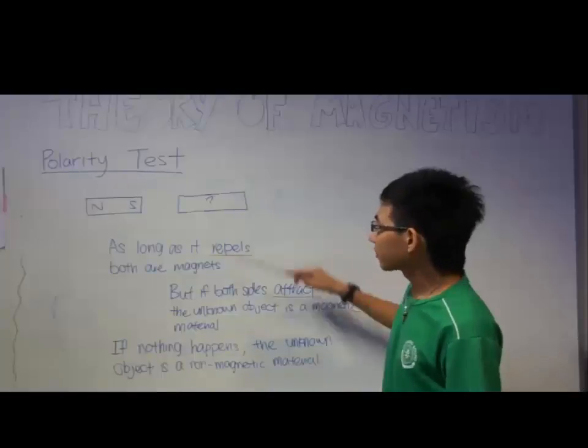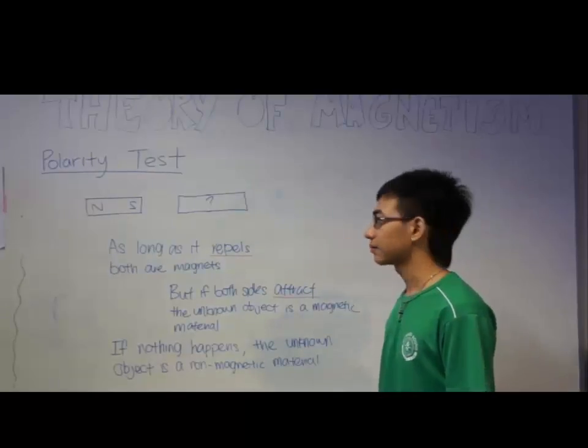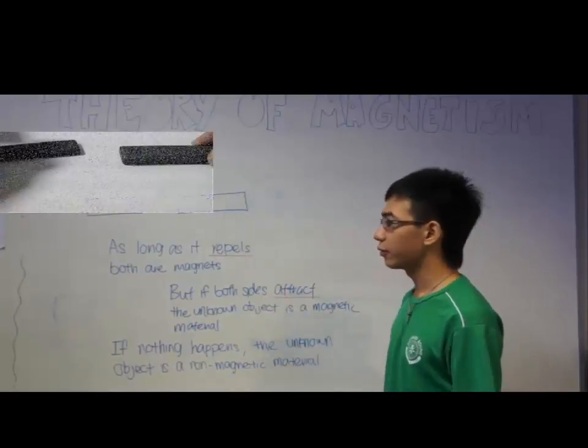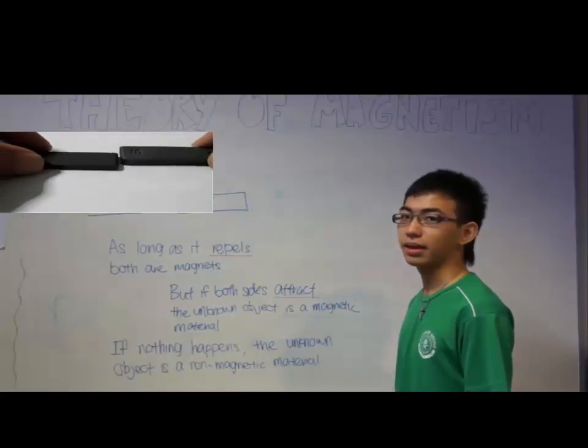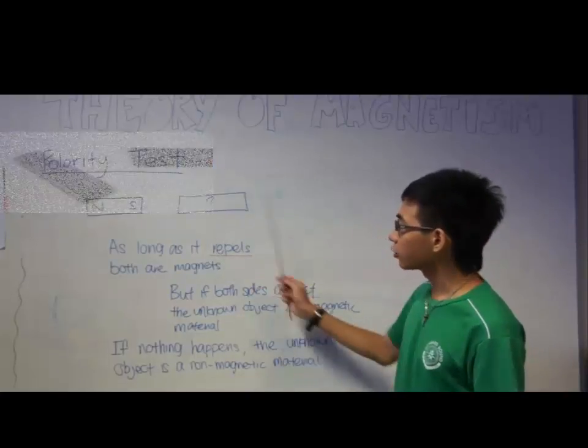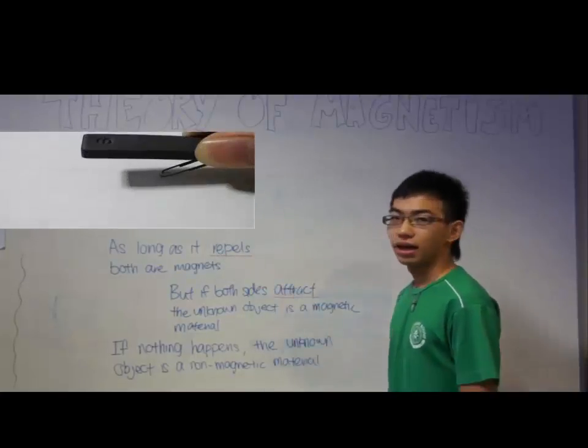Let's say you have an unknown object and you don't know what it is. If you see that one side of it repels, you can assume that it's a magnet. But if both sides attract, it's a magnetic material.